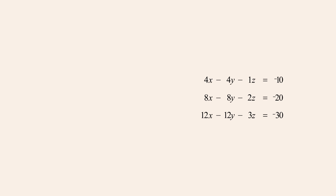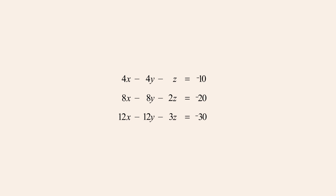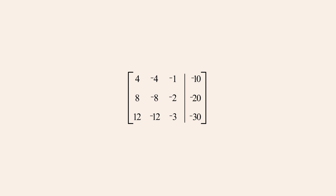Since the three equations all have the same solution set they all correspond to the same plane, and so any two of them can be eliminated without affecting the solutions of the system. Now let's represent this system of equations as a matrix and see what happens when we transform it to reduced row echelon form. Once again, we start the process of Gauss-Jordan elimination by changing the first row's leading entry to a one using a scale operation to multiply row one by one-fourth.